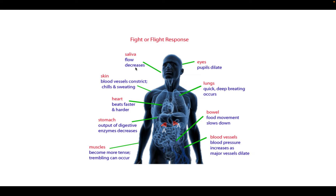Saliva flow decreases — saliva is used for digestion, and we don't need to digest food when we're amped up for fast actions because digesting food is storing it for later; we're only thinking about the here and now. Your pupils are dilated, bringing in more light and allowing better sight. In the lungs, quick deep breathing brings in more oxygen more quickly to get it to all of the tissues.